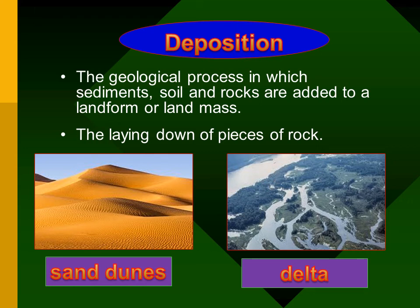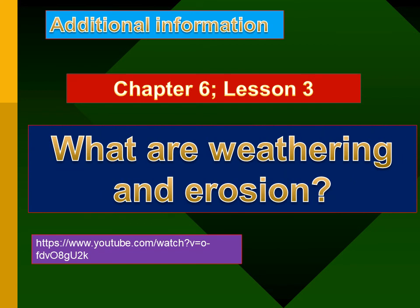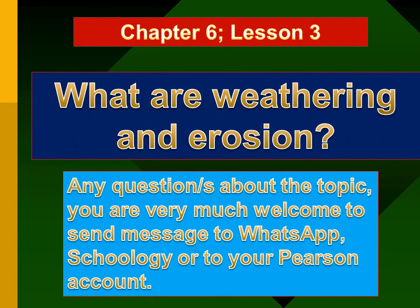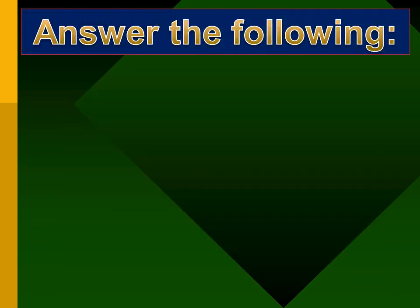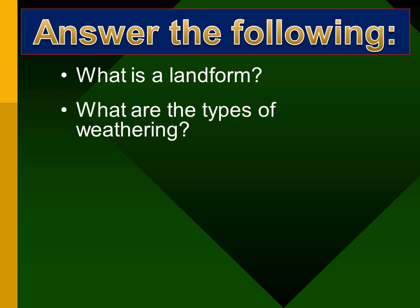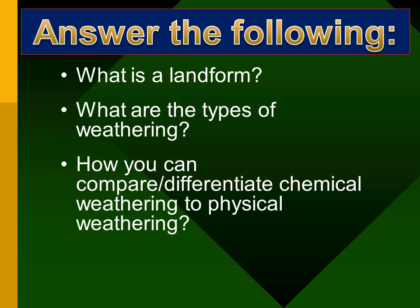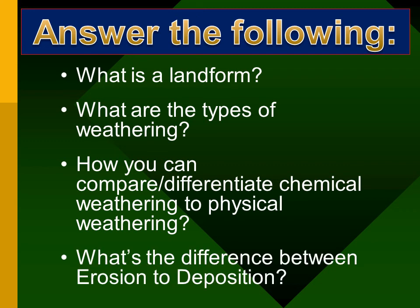Now you know what weathering, erosion, and deposition are. Additional information is available from the YouTube links attached. If you have any further questions, you can ask through your Zoom classes, WhatsApp, Schoology, or your PLS. The key summary questions are: What is a landform? What are the types of weathering? How do chemical and physical weathering differ? And what is the difference between erosion and deposition? For more videos, please see the attached YouTube links. Thank you all.